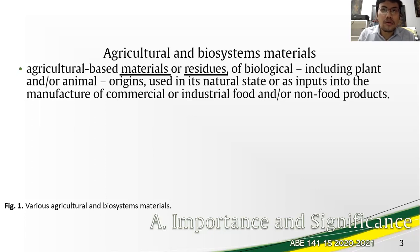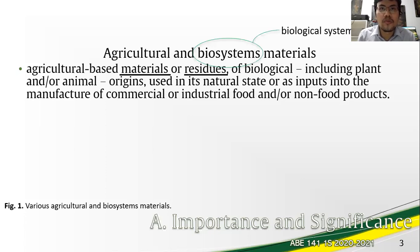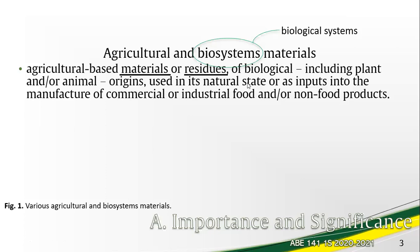Before everything else, we need to acquaint ourselves with what AB materials are. Biosystems mean biological systems. So AB materials pertain to agricultural-based materials, materials or residues — including plant, animal, and marine materials or residues, or biological materials — used as they are, in their natural state, or as inputs in the manufacture of commercial or industrial food and/or non-food products.